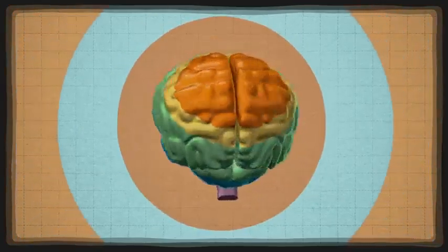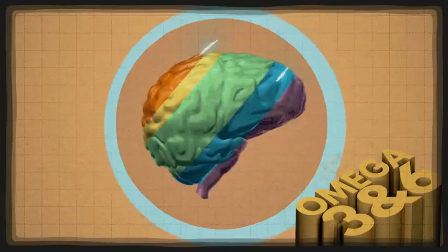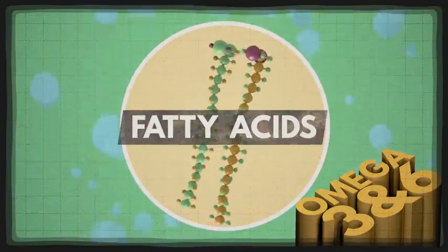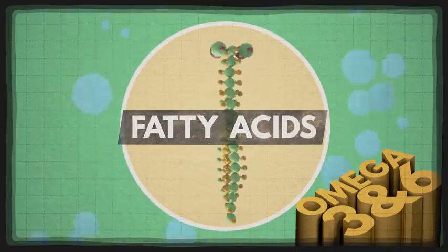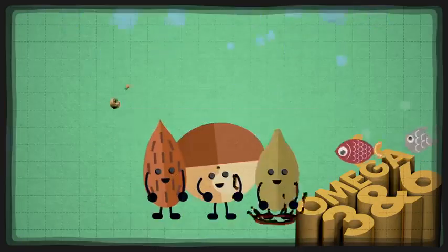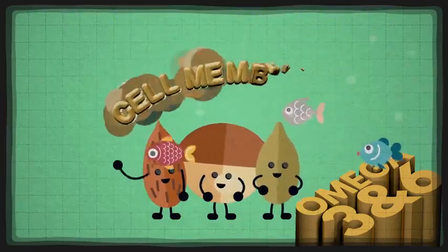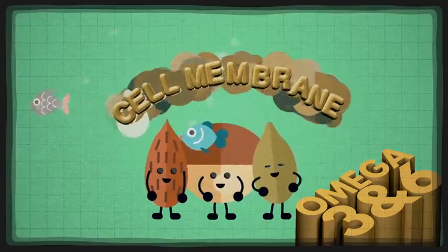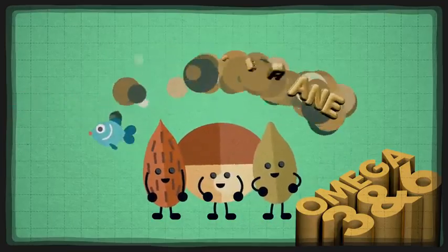The superstars are omegas 3 and 6. These essential fatty acids, which have been linked to preventing degenerative brain conditions, must come from our diets. So eating omega-rich foods like nuts, seeds, and fatty fish is crucial to the creation and maintenance of cell membranes. And while omegas are good fats for your brain,